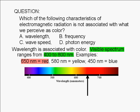We perceive electromagnetic radiation with a wavelength of 580 nanometers as yellow, and we perceive electromagnetic radiation with a wavelength of 450 nanometers as blue.